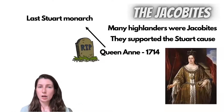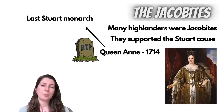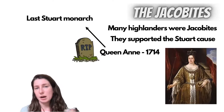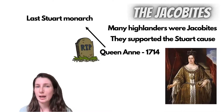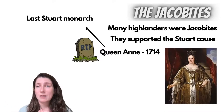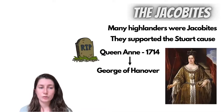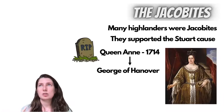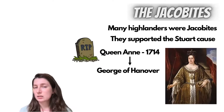The last Stuart monarch in England and Scotland was Queen Anne, and Queen Anne died in 1714. She died without a child. She was married to a man called George who was from Denmark, but they didn't have a child of their own. So when she died, her cousin George of Hanover — who was her closest, though still distant, relative, I think a second cousin — was the closest Protestant relative and was invited to come and be king.